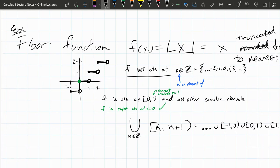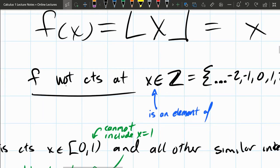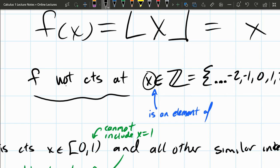And we write that as this weird capital Z. And this means integers right here. This symbol means is an element of. So this reads, the function f is not continuous at x values that are integers. And what are integers? Those are just whole numbers, positive and negative.